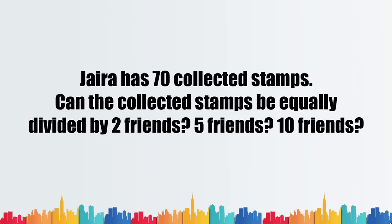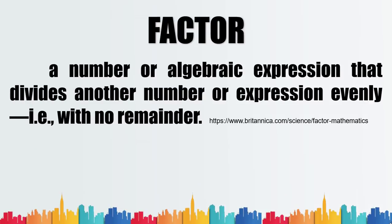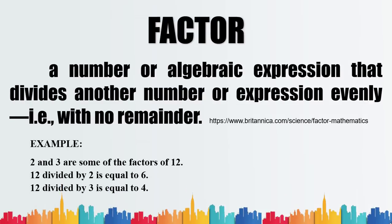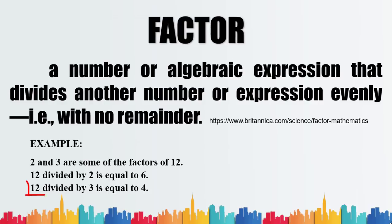So what do we mean by factor and divisible? When we say factor, it is a number that divides another number evenly, that is, with no remainder. Example: 2 and 3 are some of the factors of 12. Since when 12 is divided by 2, the answer is 6, meaning 12 is equally divided into 6 equal parts. And when 12 is divided by 3, the answer is 4, which means 12 is equally divided into 4 equal parts.